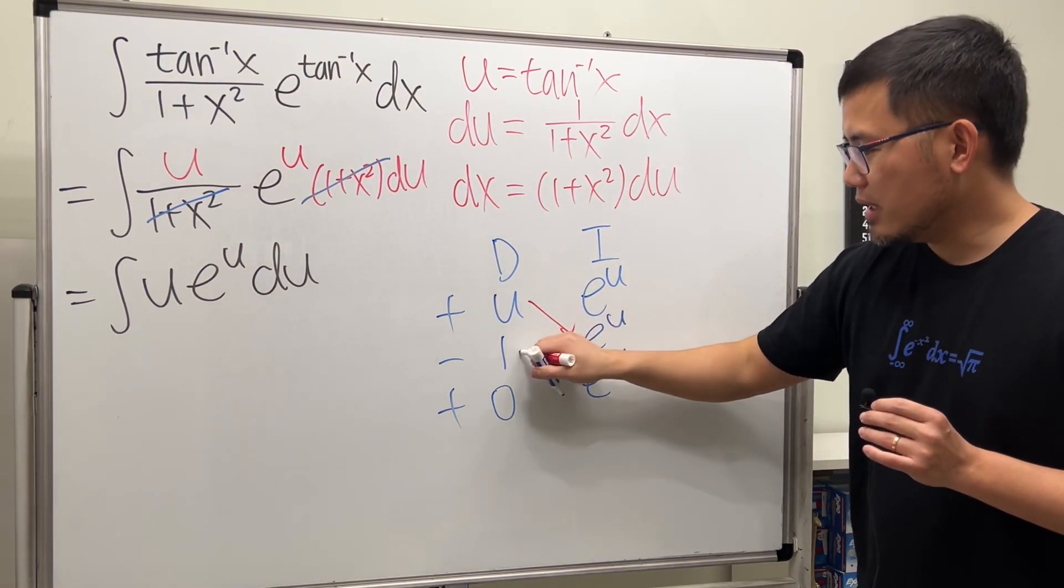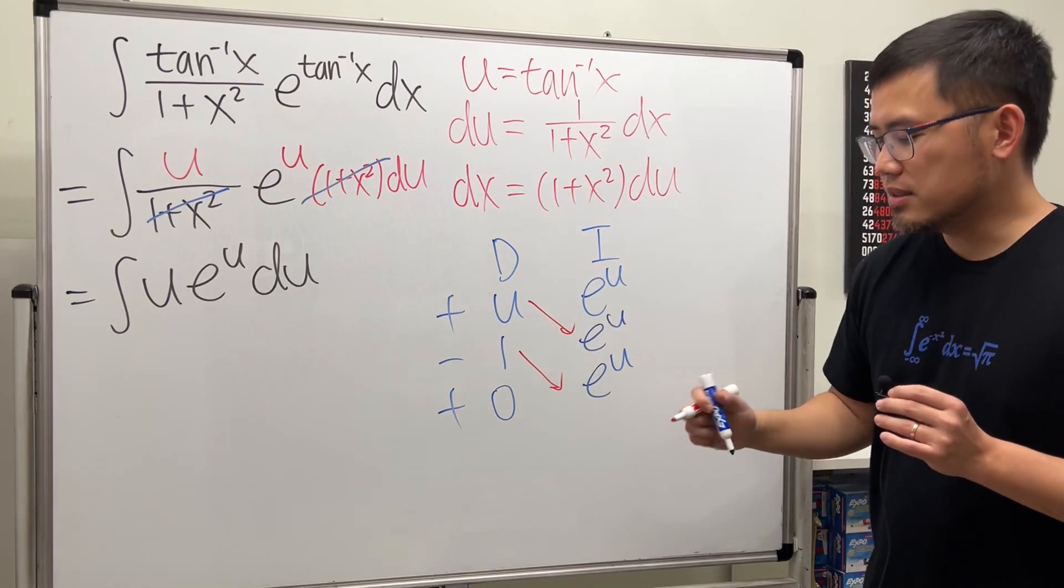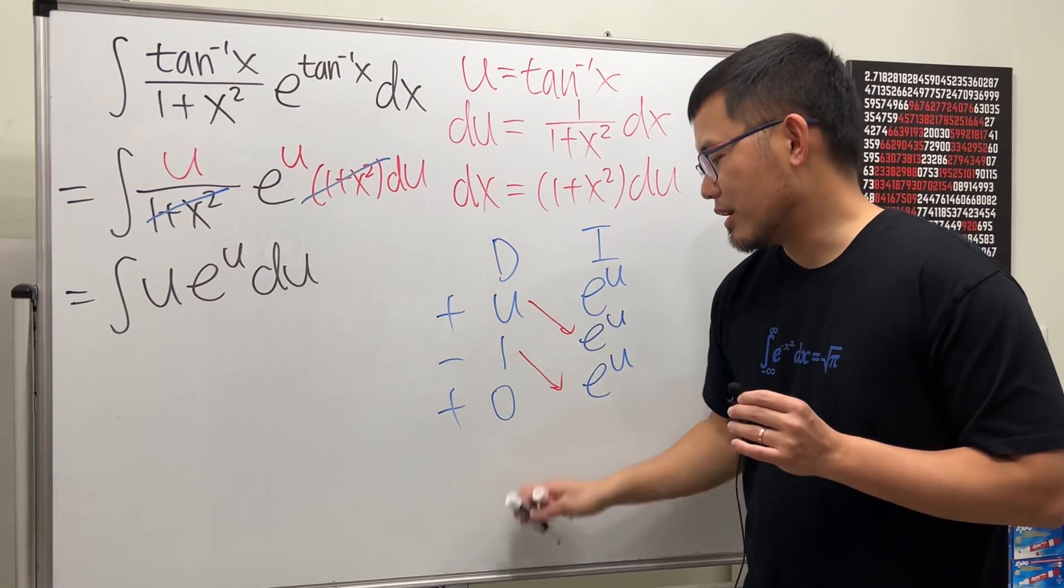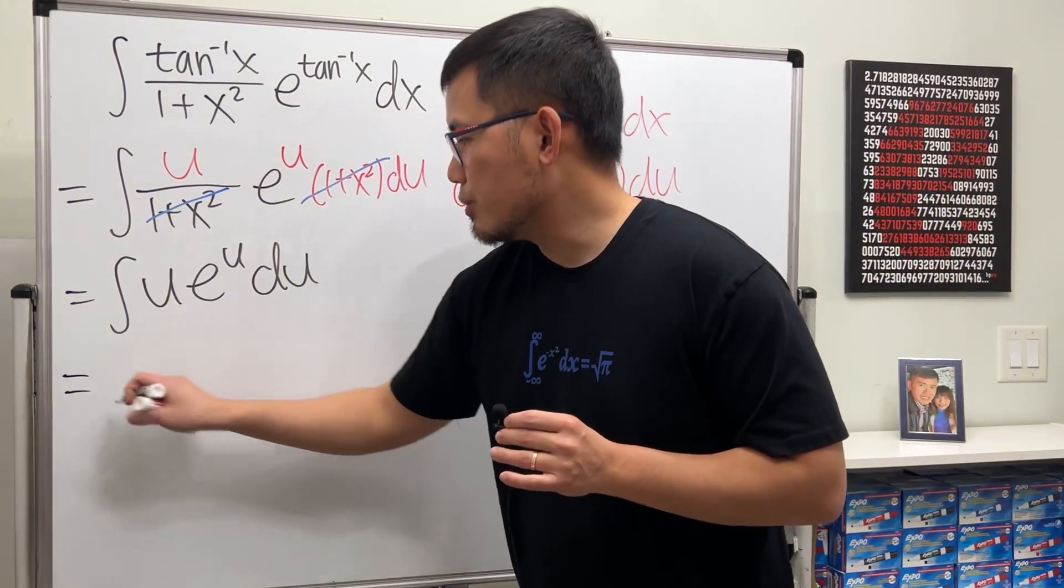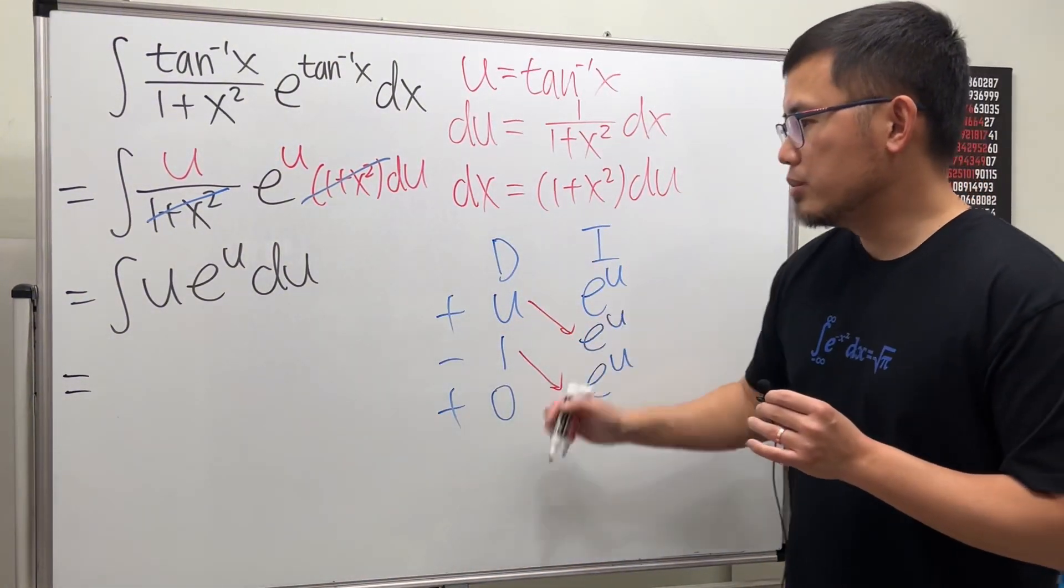And then when we integrate e to the u it's just e to the u, and then do it one more time it's e to the u. This times this is the first part of the answer, and then this times that is the second part of the answer. In fact, you don't have to continue. Zero times anything is zero.